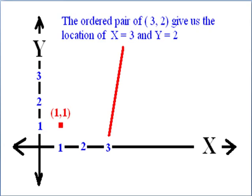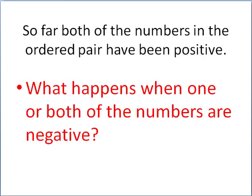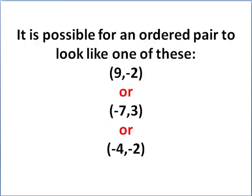Now what if we have (3, 2)? Well, x is 3, y is 2. That gives us the location of the dot (3, 2). So far everything's been positive, but what happens when one or both of the numbers are negative?